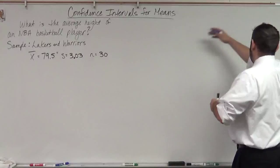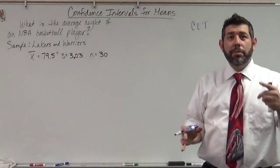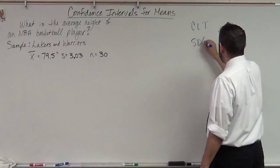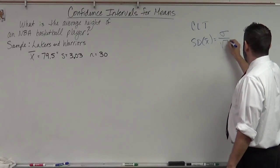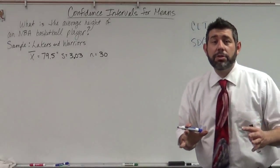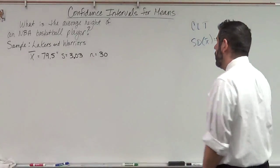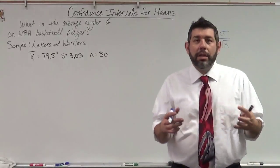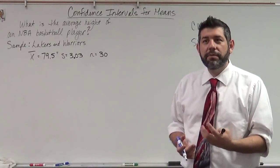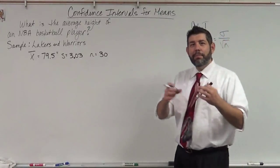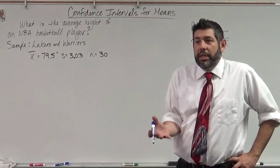The central limit theorem tells us that for our sampling distribution, our standard deviation of x-bar — which is our sample mean — is going to be sigma over the square root of n. And I can model that sampling distribution by a normal model for large samples. But what if my samples are not large? What if they are n equals 30, n equals 10, n equals 15? We're going to need to do something different. We can't assume it's going to be normal, because it might not be.